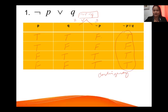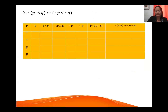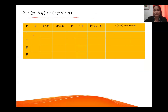Remember: if the entire statement can be either true or false, that's contingency. Next, number two: negation of the quantity p AND q, if and only if the quantity negation of p OR negation of q. We have two statements p and q, so for p: true, true, false, false; for q: true, false, true, false.